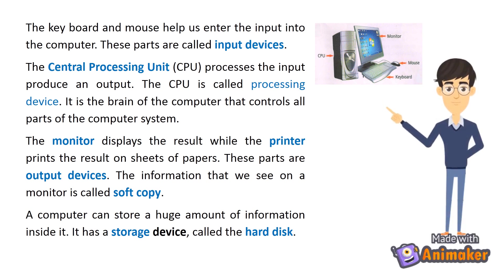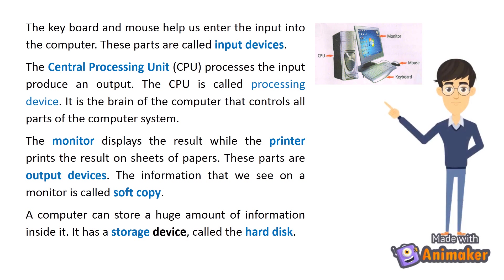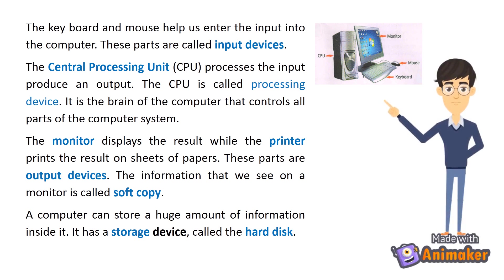The Central Processing Unit, or CPU, is the processing device. It is the brain of the computer that controls all parts of the computer system. The monitor displays the result while the printer prints the result on sheets of paper — these parts are output devices. The information we see on a monitor is called soft copy. A computer can store a huge amount of information inside it; it has a storage device called the hard disk.